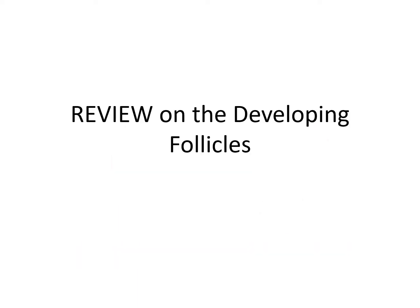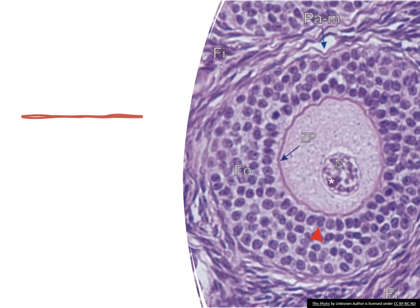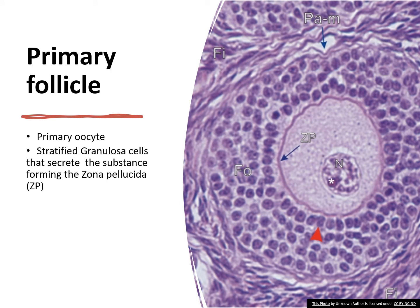In the next few slides, let's see if you can identify whether the micrographs are showing growing follicles, primordial follicles, Graafian follicles, primary or secondary follicles. What kind of follicle is shown in this micrograph? If your answer is primary follicle, you are correct. A primary follicle consists of a primary oocyte with stratified granulosa cells that secrete the substance forming the zona pellucida, labeled as ZP in this micrograph.